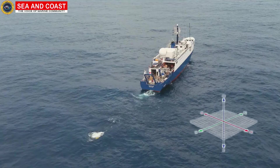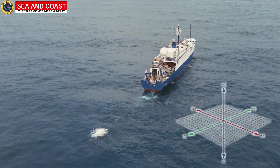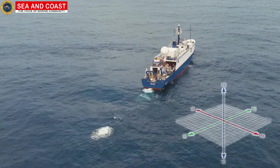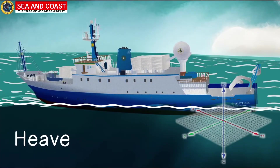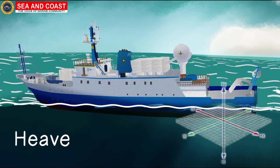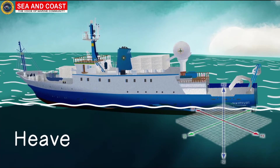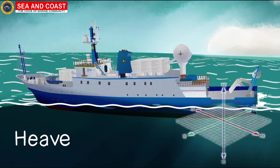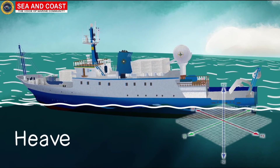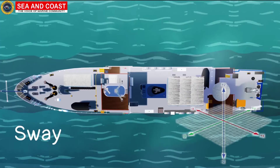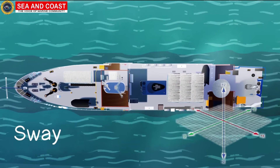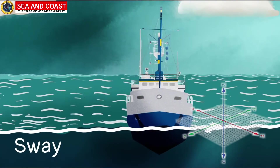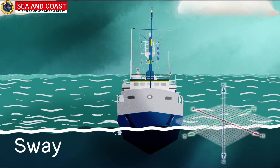Now if we go deeper and consider a graphical explanation, in transverse movements, when the ship moves up and down about the z-axis, this type of movement is called heave. When the ship moves sideways from one side to another along the y-axis, it's known as sway.